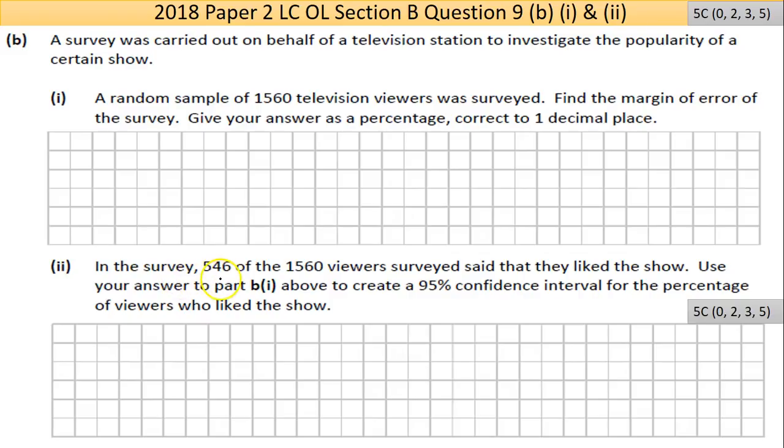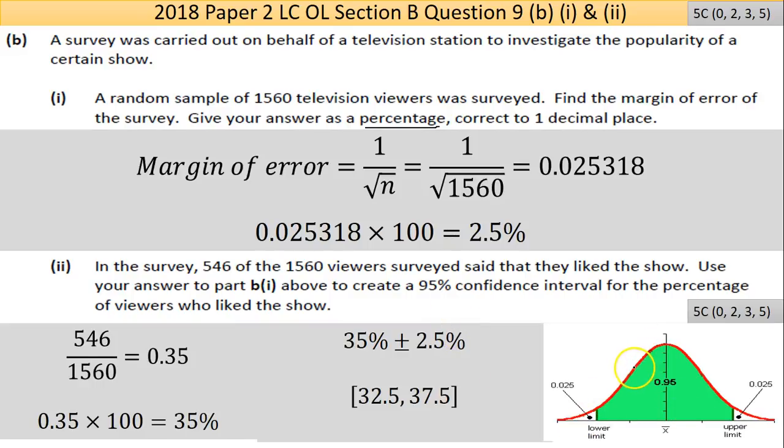Part two says in the survey, 546 of the 560 viewers surveyed said that they liked the show. Use your answer to part B1 to create a 95% confidence interval for the percentage of viewers who liked the show. When you have your standard distribution, you have your middle group - that's something like 68%, maybe your larger group here - everybody in there is the 95%. What's outside that? This diagram here is better than my attempt.